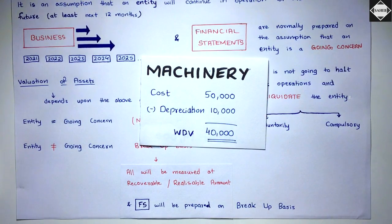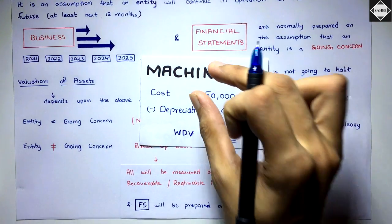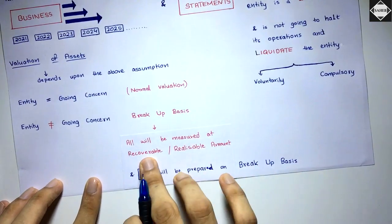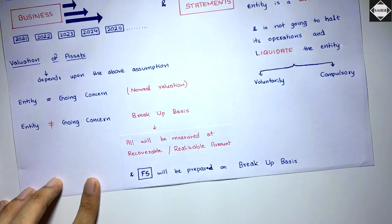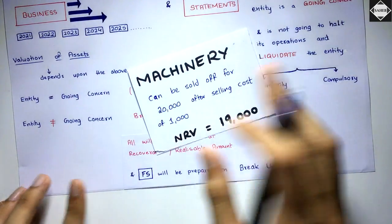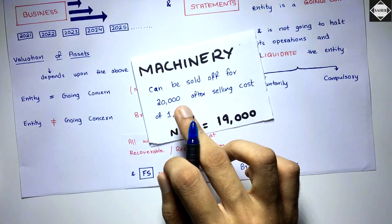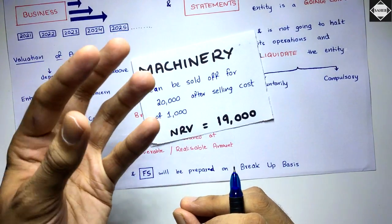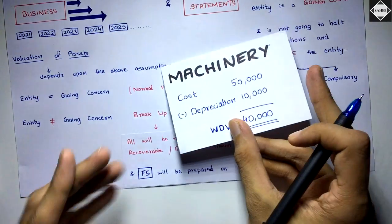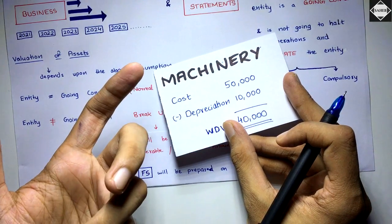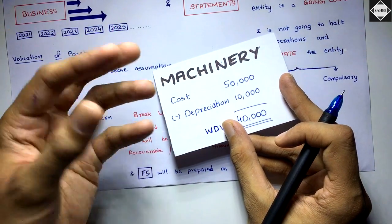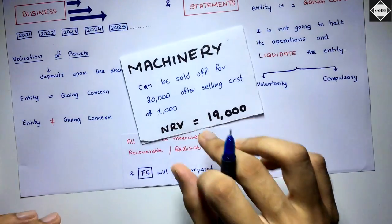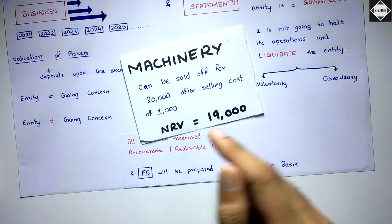On breakup basis, you have to take the net realizable value. All assets will be measured at recoverable or realizable amounts. For example, let's say the machinery can only be sold for 20,000, because whenever you purchase any asset, the value falls immediately — you cannot sell it at the same price you paid. Just like a phone purchased for 1 lakh cannot be resold at 1 lakh.